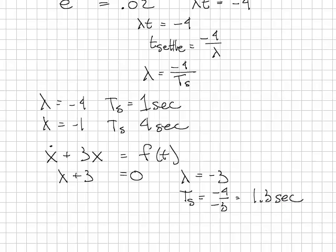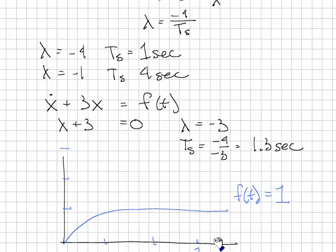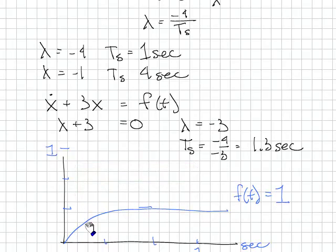If you were to solve this system and plot the results for f of t is equal to 1, you'd find that the system looks something like this, where this is 1 here and this is 1 here in seconds. So given this differential equation where the forcing function is 1, you find that the system grows to approximately 1 third, and it takes it about 1.3 seconds to do that.